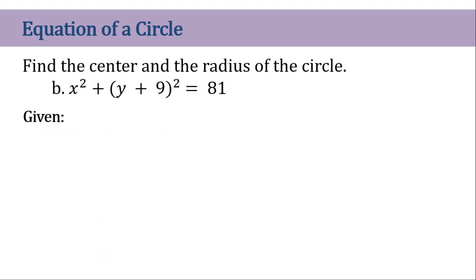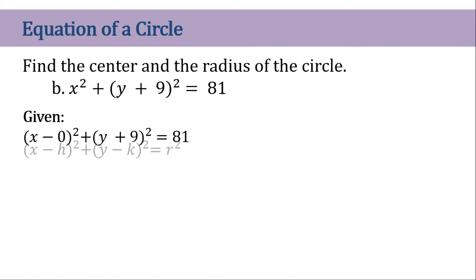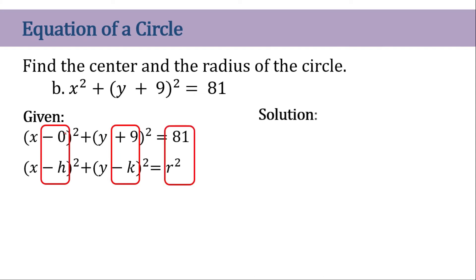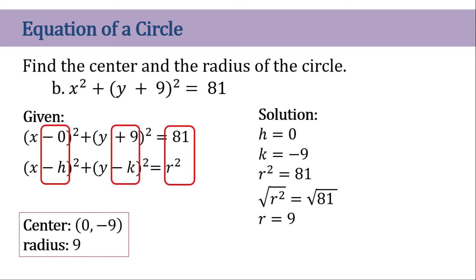For the next one, if we transform the equation into standard form, we can say x minus 0 squared is equivalent to that. So h equals 0, k equals negative 9, and r squared equals 81. Taking the square root, r equals 9. So the center is (0, -9) and the radius is 9 units.